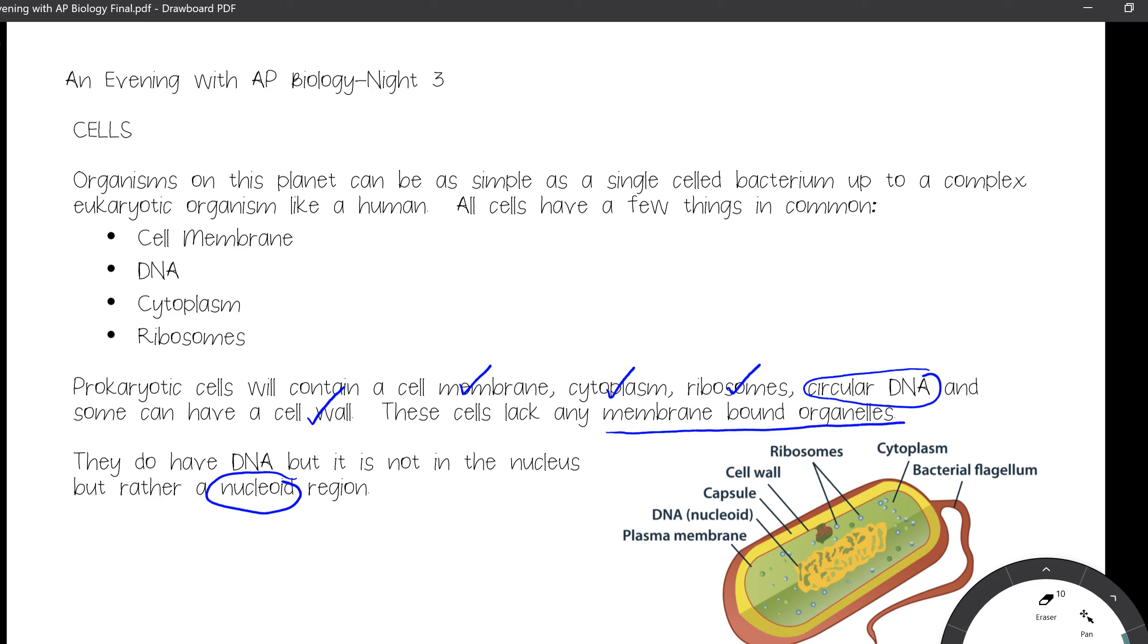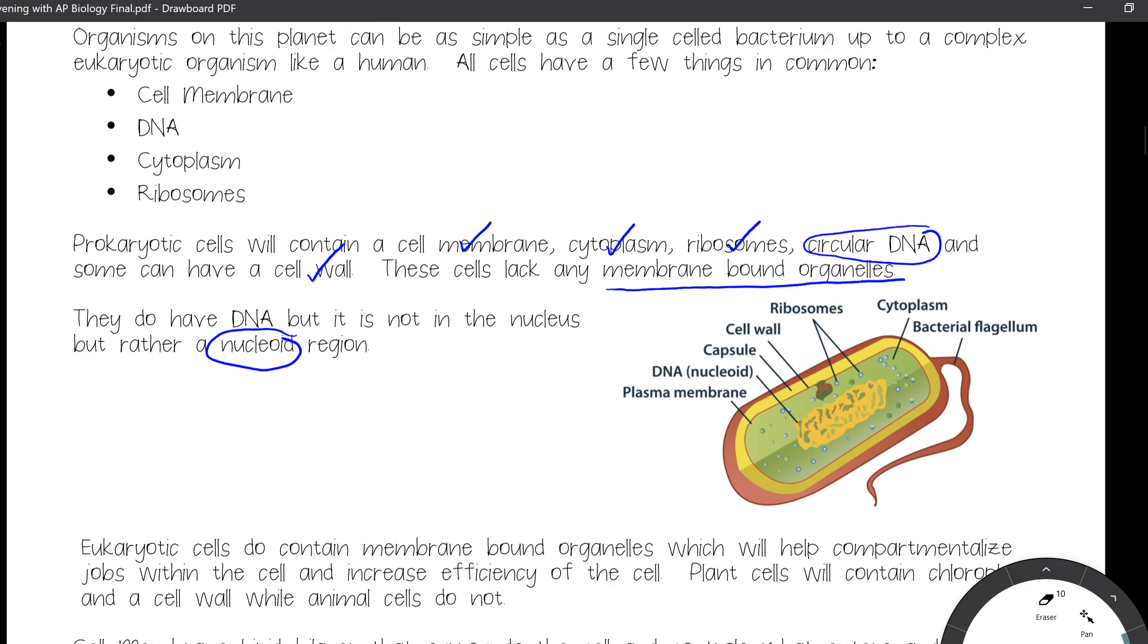They're not going to have endoplasmic reticulum. They're not going to have Golgi. They're not going to have lysosomes. They're not going to have any of that, so if you look at a very simple prokaryotic cell, they may have a flagella. It'll be that right there. This particular example does have a cell wall, and your DNA is in the nucleoid region, your plasma membrane, or your cell membrane, found there.